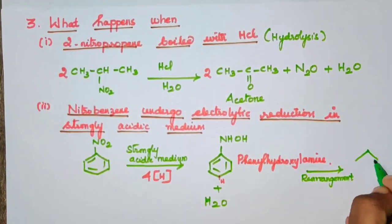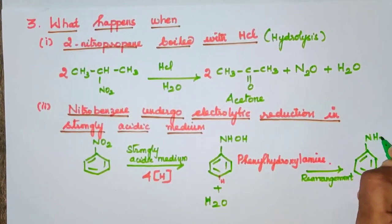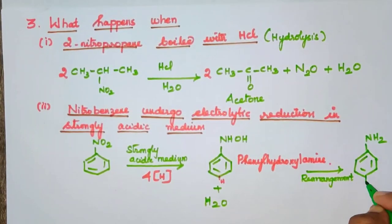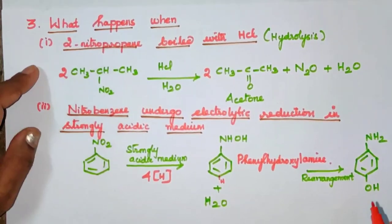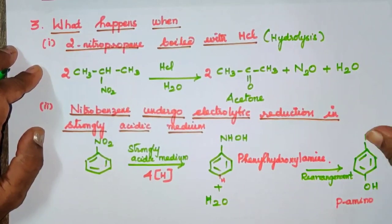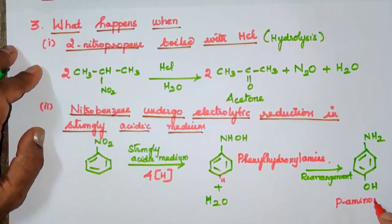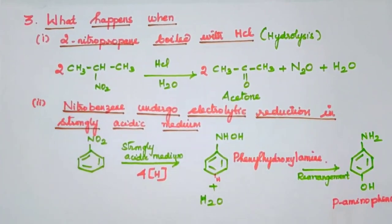Looking at the product: at one position there is NH2, and at the para position OH is formed. In this compound, para-amino and phenol groups are present — this is the product formed, which is para-aminophenol. This occurs via a rearrangement of phenylhydroxylamine.